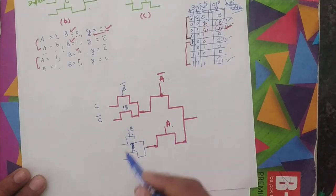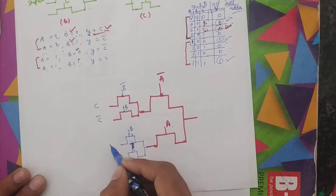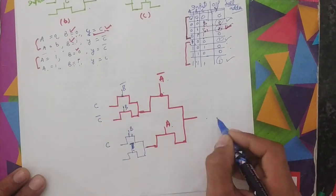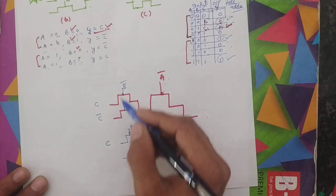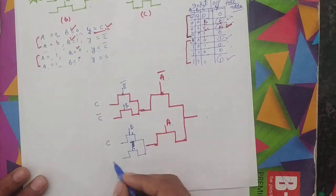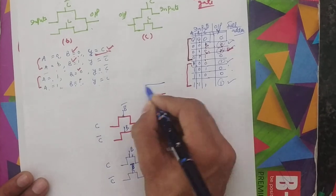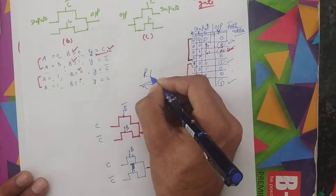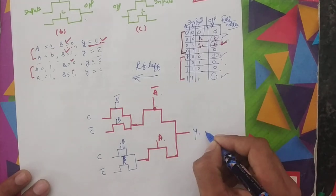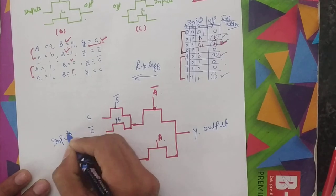When A equals 1 and B both are 1, what is the value of C? That is Y equals C. We write the inputs on the left side — that is C — and the output is on the right side. When A equals 1 and B equals 0, then Y equals C complement. When making this circuit, we move from right to left: on the right side we have the output, and on the left side we have the inputs.